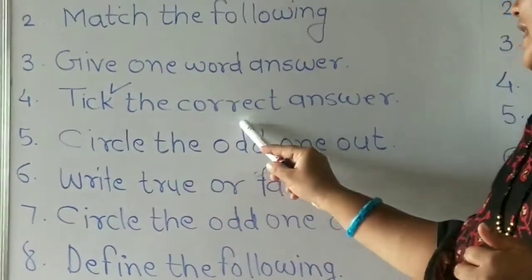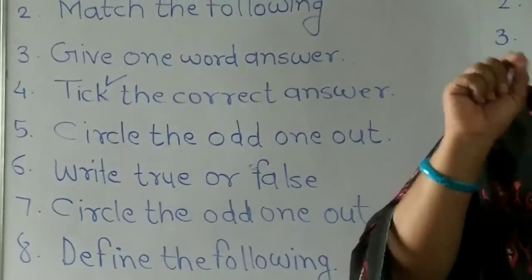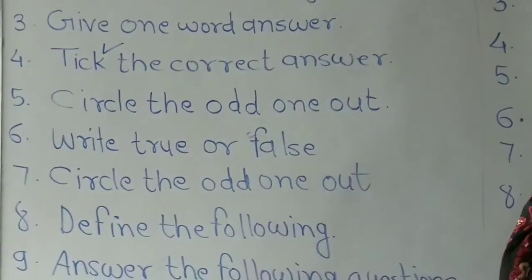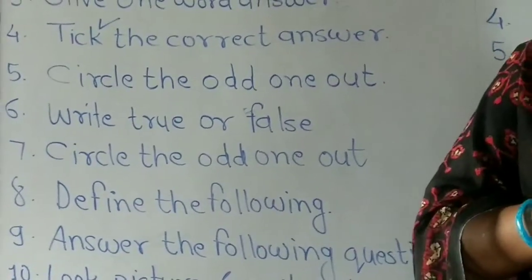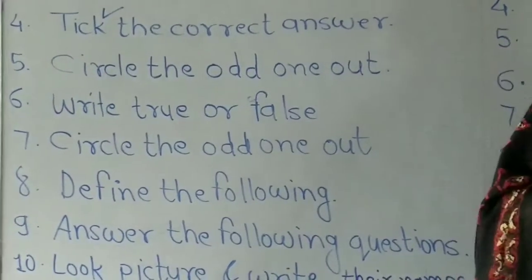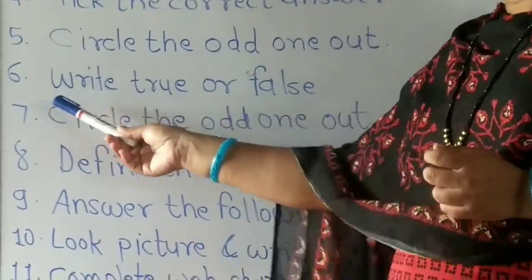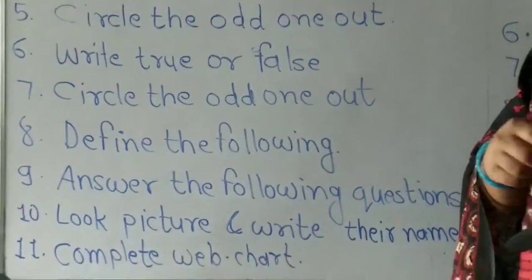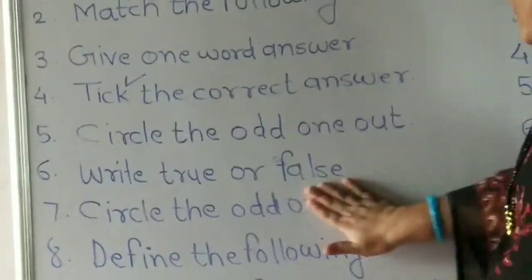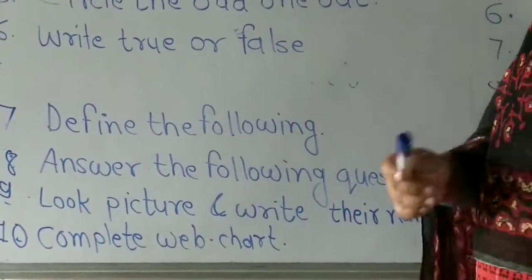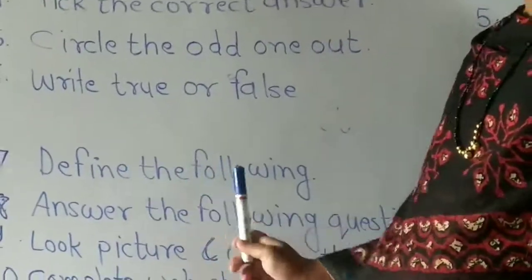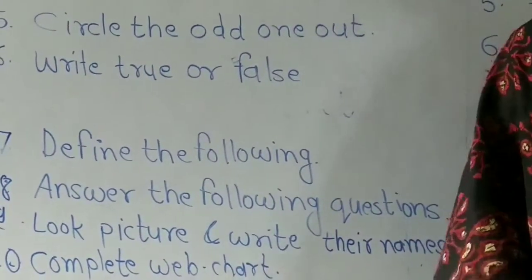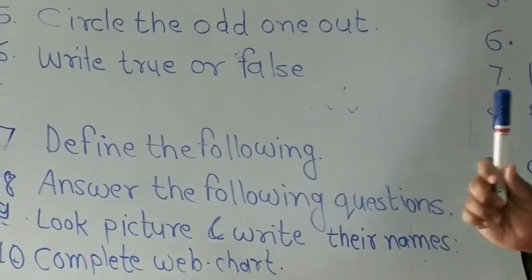Type number 4: tick the correct answer — put a tick on the correct answer. Type number 5: circle the odd one out — circle the word that does not belong. Type number 6: true or false — true means correct, false means wrong. Type number 7: define the following — write the definition. Type number 8: answer the following questions — write the answer.